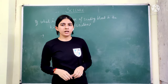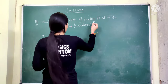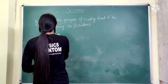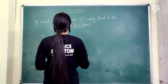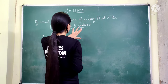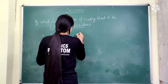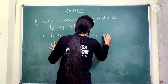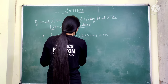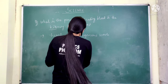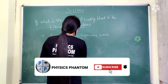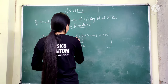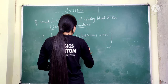Next question: what is the purpose of sending blood to the kidney for filtration? The answer is: first, nitrogenous waste is removed; second, unwanted salts present in blood are removed; and third, toxins are removed. So the three things removed by the kidney are nitrogenous waste, salts, and toxins.